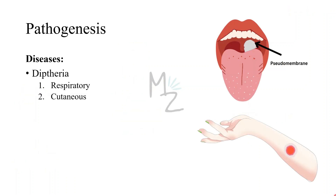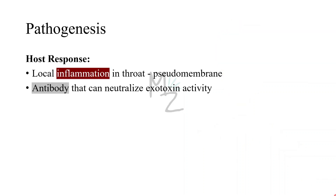Corynebacterium diphtheriae causes the famous disease diphtheria, which has two types: respiratory and cutaneous. Respiratory diphtheria occurs in the upper respiratory tract and features the pseudomembrane — the significant characteristic of diphtheria. Cutaneous diphtheria occurs in the skin. There are two major host responses: a local inflammation in the throat with fibrinous exudate forming a tough, adherent gray pseudomembrane; and an antibody response that neutralizes exotoxin activity by blocking the binding domain interaction with receptors, preventing entry into the cell.